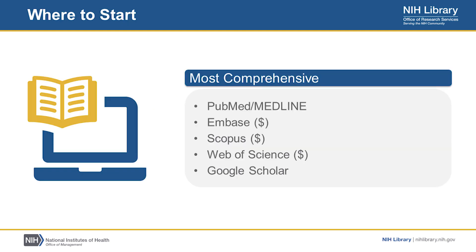So where do you start searching? Ideally, you want to search one of the most comprehensive databases to get the most out of your initial search. PubMed Medline is a great place to start. Some other resources you may want to consider that are very comprehensive include Embase, Scopus, Web of Science, and even Google Scholar. But keep in mind, as mentioned earlier, that some of these databases, such as Embase, may be fee-based or subscription only.